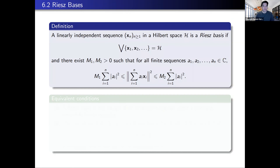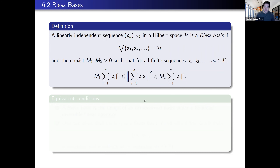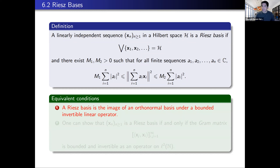Another direction would be to relax the notion of basis — instead of insisting on orthonormal bases, what about something that's kind of like an orthonormal basis? These are called Riesz spaces. A linearly independent sequence x_n in an abstract Hilbert space H is a Riesz basis if its closed linear span is the whole space, and moreover it satisfies an approximate Parseval condition: for any finite sequence of coefficients, the norm of the finite linear combination is bounded above and below by a constant times the sum of squares of the absolute values of the coefficients.